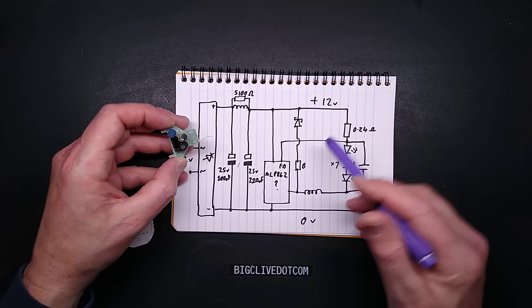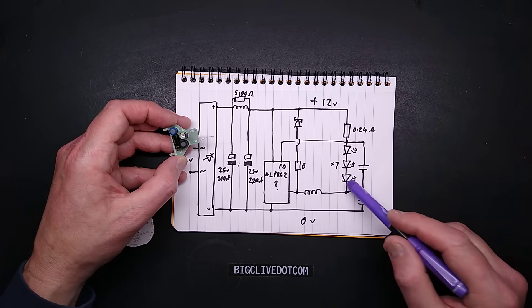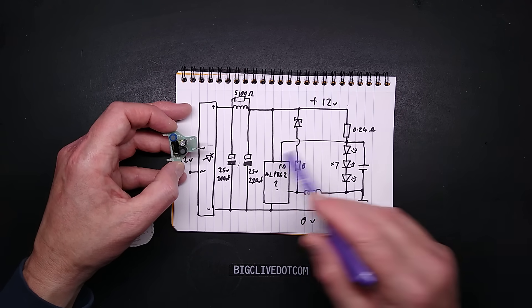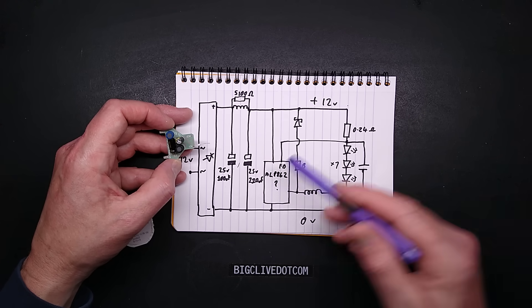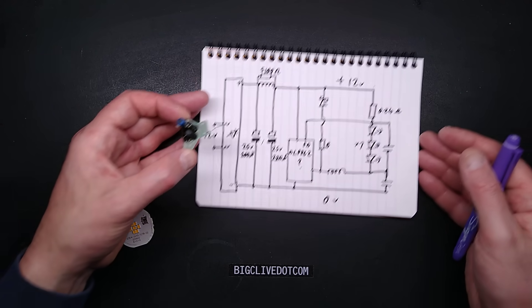They'll pretty much handle from about the minimum which these LEDs are going to light, say 9 or 10 volts, which you don't really want your 12 volt battery going below that. And it will happily handle up to about 24 volts probably. So it's going to be well within the range of a standard car battery. But that is it.